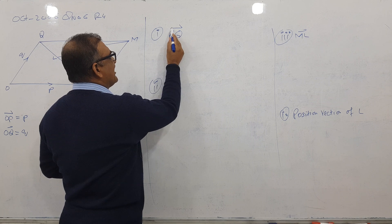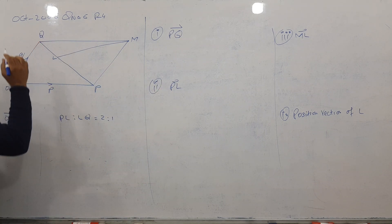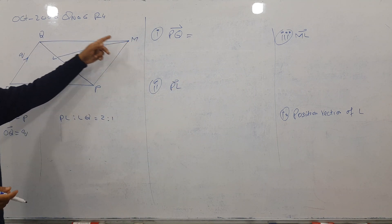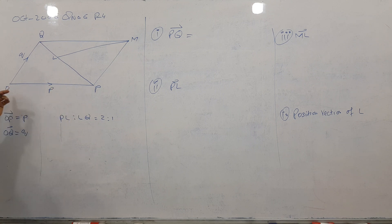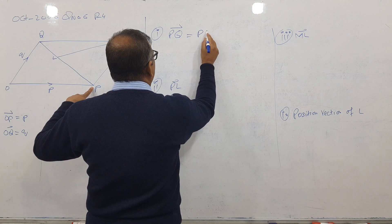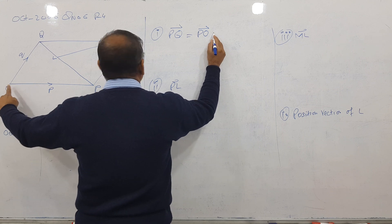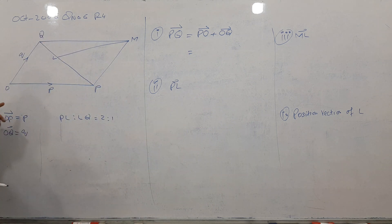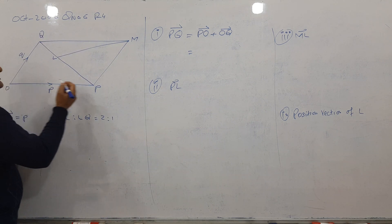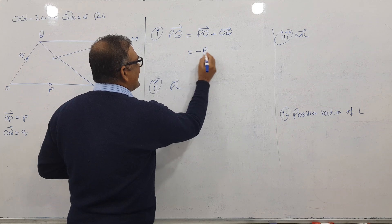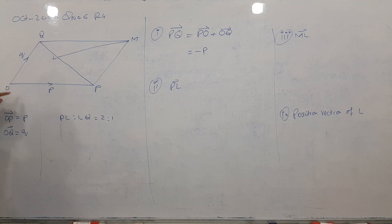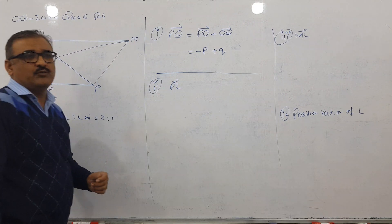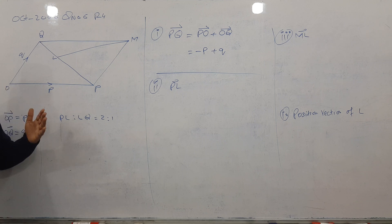First question: the arrow is starting from P ending at Q. I have two paths. Path one: P to M, M to Q. Path two: P to O, O to Q. I'll use path two — P to O plus O to Q. P to O is backwards along P, so it becomes minus P. O to Q is just Q. So the answer is minus P plus Q.